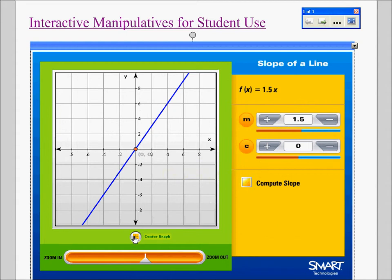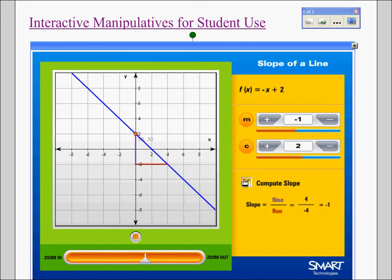We can zoom in and out. We can center the graph. We can change the slope and see how it changes the line. We can change the y-intercept and compute the slope.